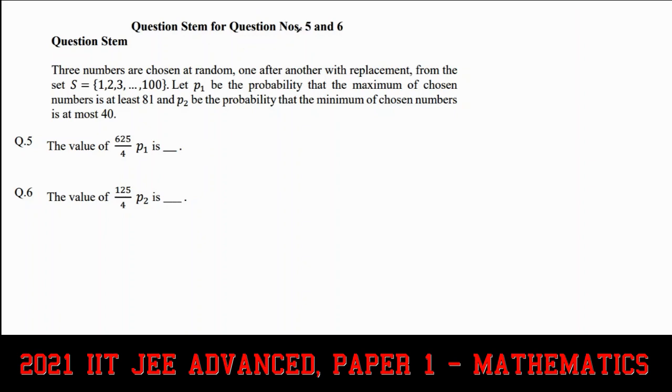This is from the 2021 paper 1 exam, and it gives us a set S with the numbers 1 through 100, and three numbers are chosen at random, one after another, and there's replacement involved. Now, P1 is the probability that the maximum of the chosen numbers is at least 81, and P2 is the probability that the minimum is at most 40.